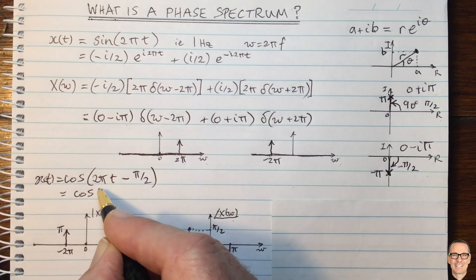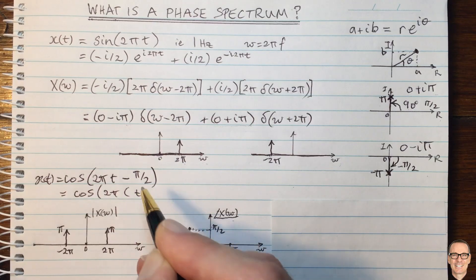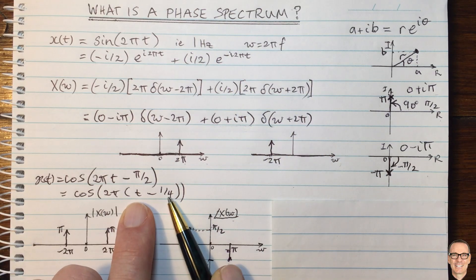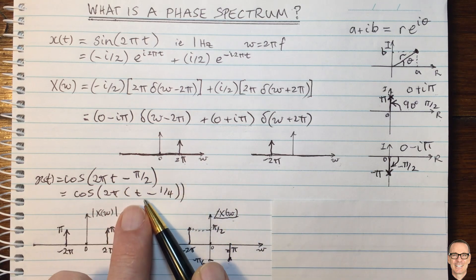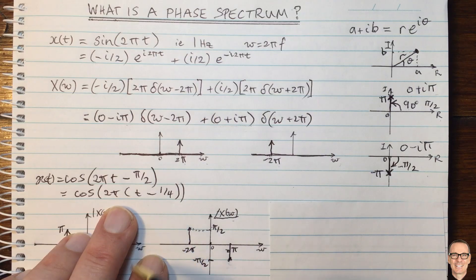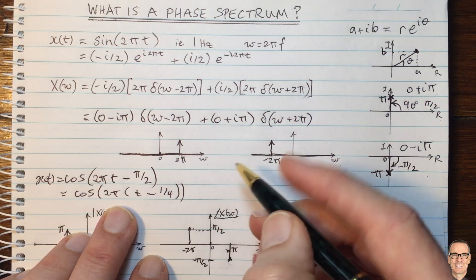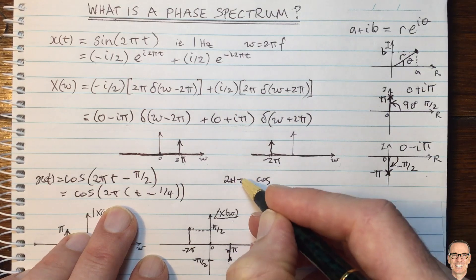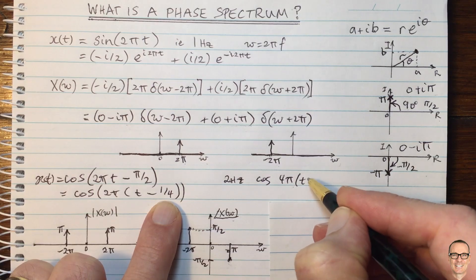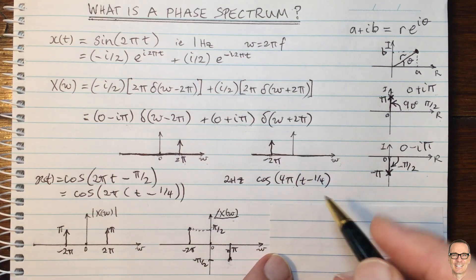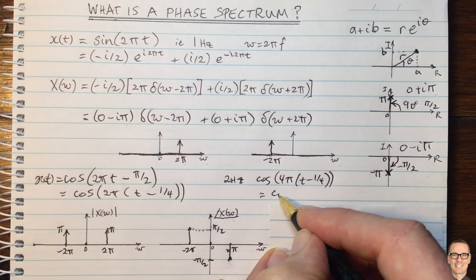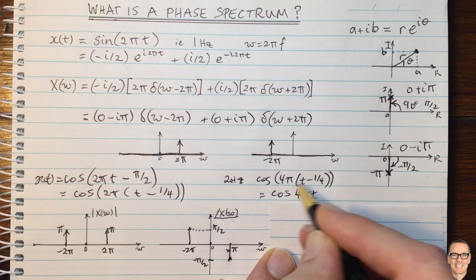We can also write this as cos of 2 pi times the quantity t minus one quarter. For this 1 Hz waveform, that corresponds to a quarter-second time delay — a phase shift of minus pi over 2 but a time delay of a quarter of a second. Now for a 2 Hz signal, we would have cos of 4 pi times t minus one quarter. For the same time shift, a wave at twice the frequency will have a phase shift of pi — double the phase shift.